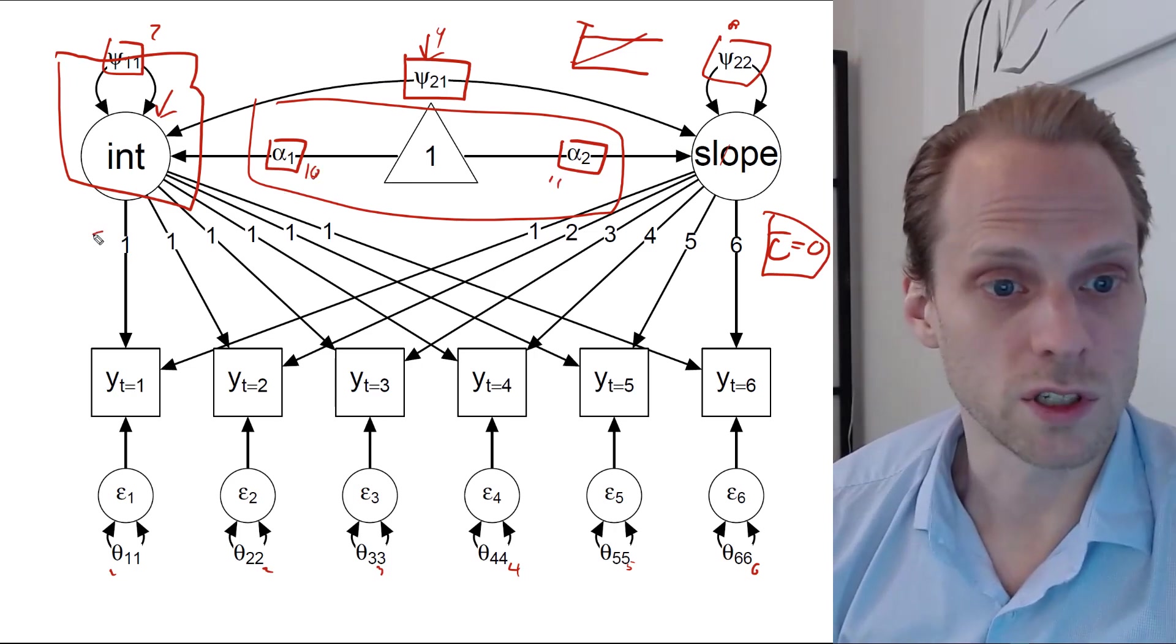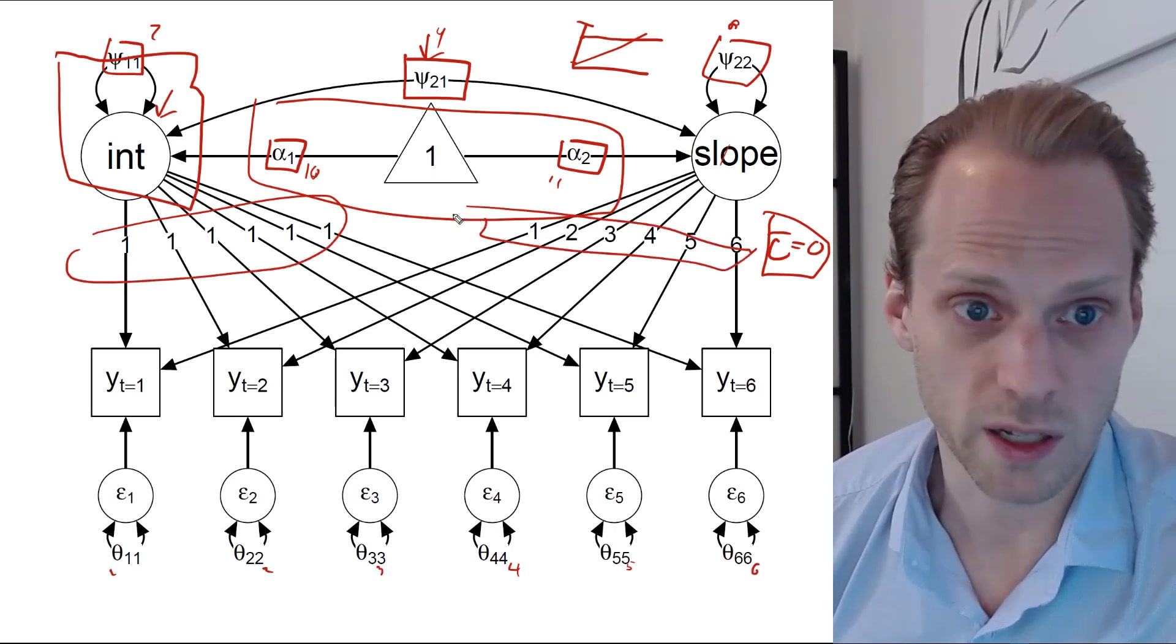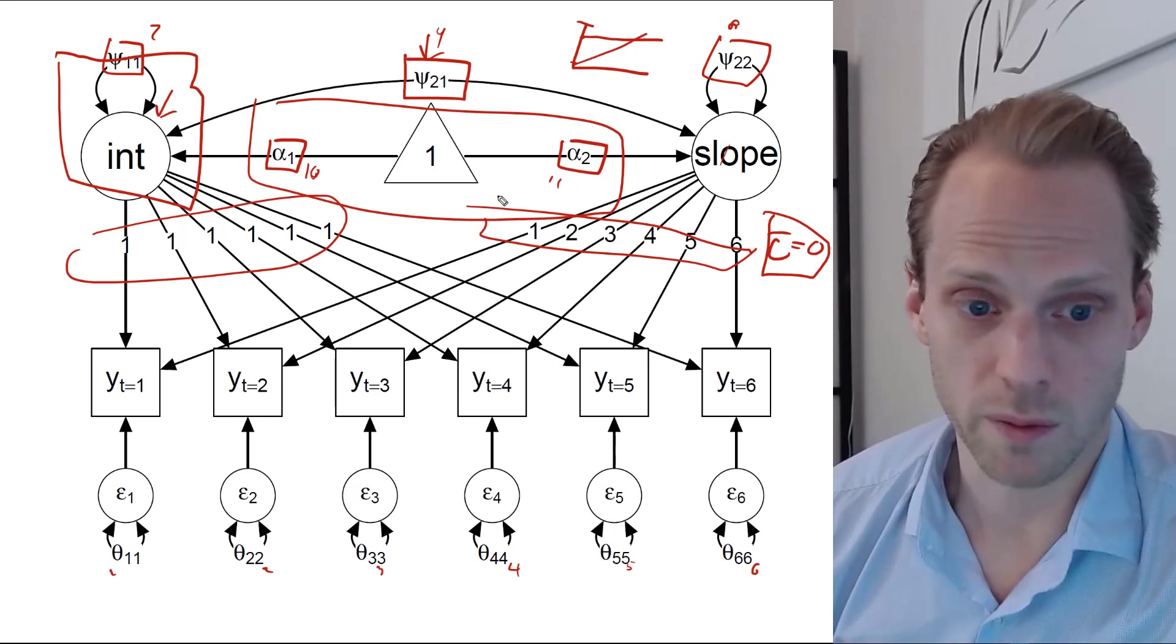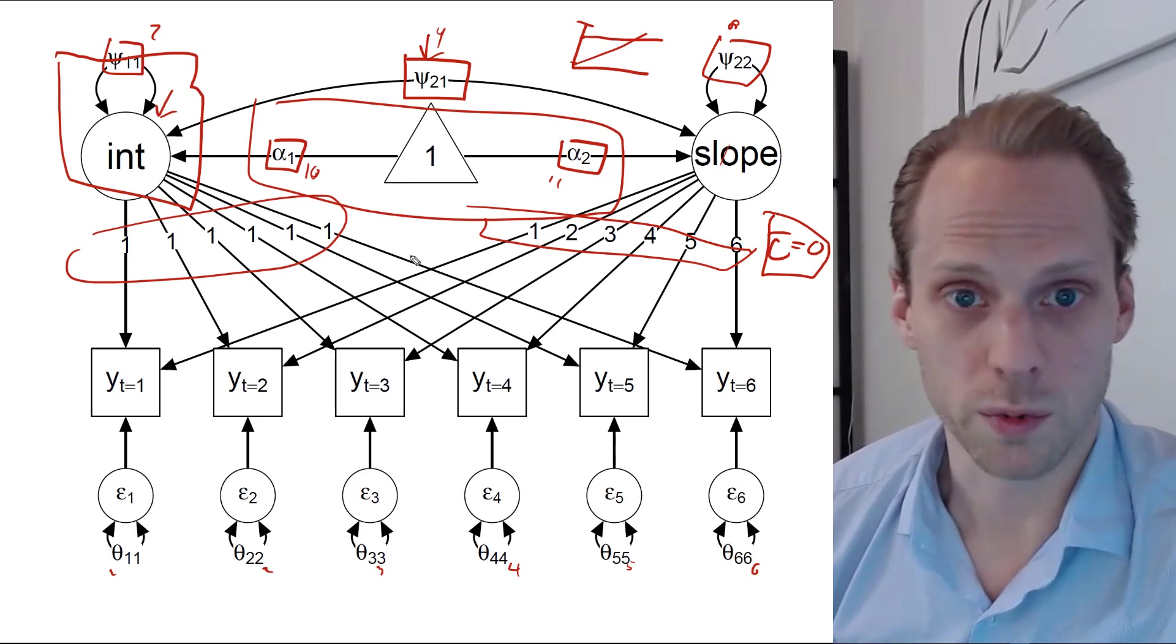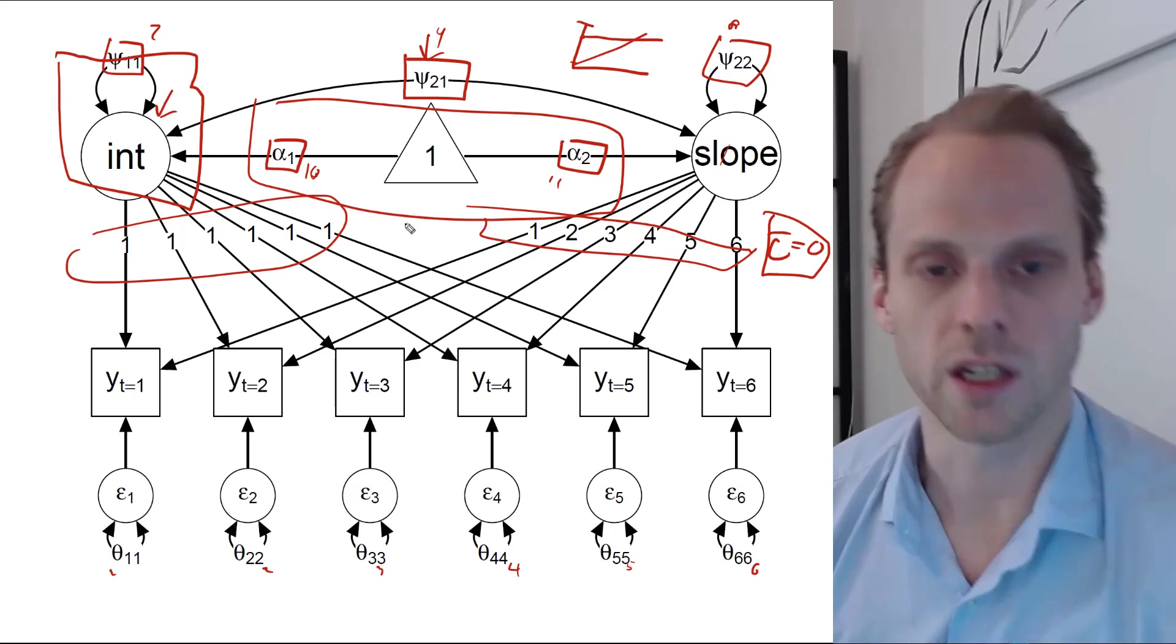And that's it, because this is all already specified to some value, so we don't have to estimate it. So we have 11 parameters, and we have many more observations. So that gives us a very nicely identified model.